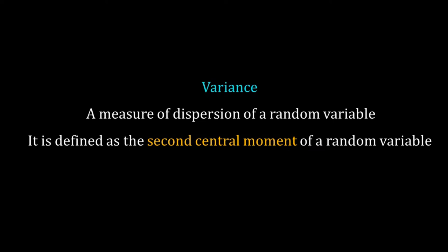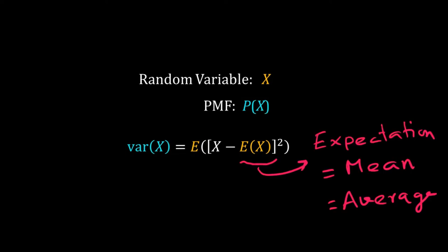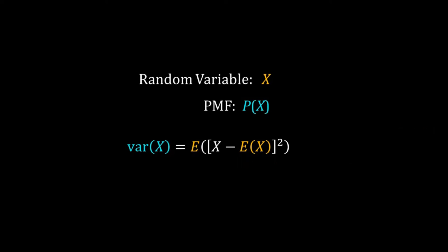Otherwise you can watch a video on moments from my systems biology lectures. Let X be a discrete random variable with the PMF p(x). Then the variance of X is defined as the expectation of the square of X minus expectation of X, squared. Expectation of X is the mean or average of X, so variance is the average squared deviation from the mean.